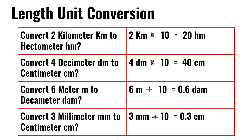Convert 6 meters to decimeters: 6 meters divided by 10 is 0.6 decimeters. Convert 3 millimeters to centimeters: 3 millimeters divided by 10 is 0.3 centimeters.